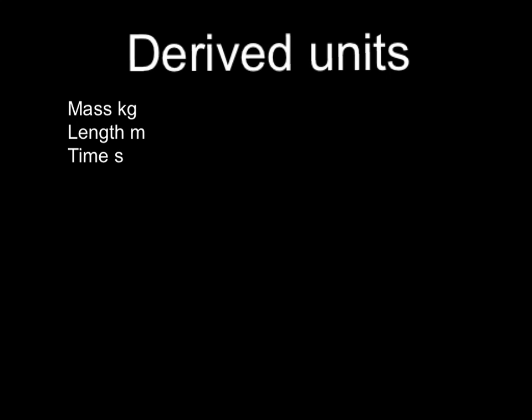This unit's about derived units, what they are, but more importantly, how to convert them, because sometimes that's a little tricky. Remember our basic units were kilograms, meters, and seconds. So mass for kilograms, length meters, time seconds. When we put these guys together in a combination, then we have a derived unit.